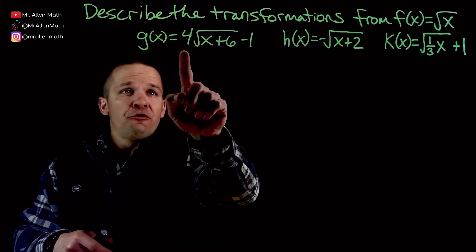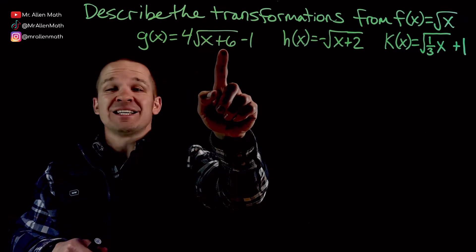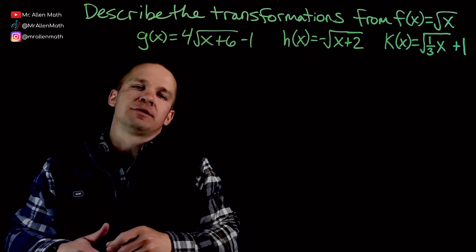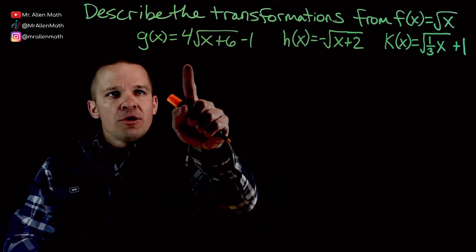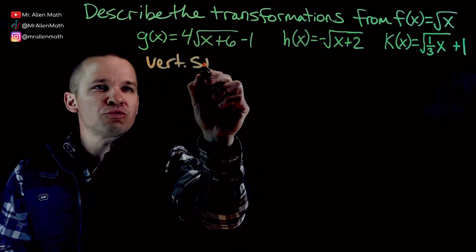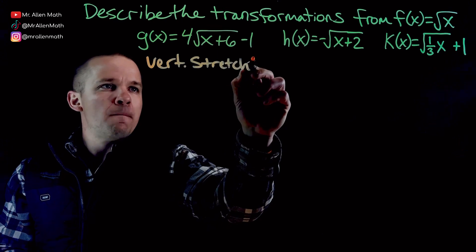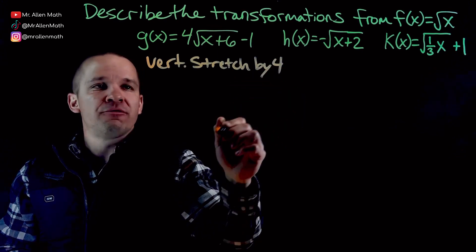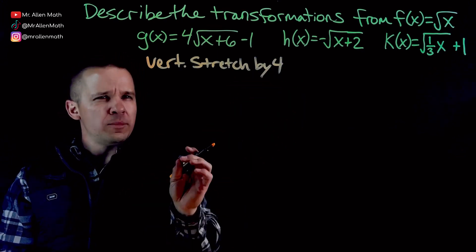So we've got g(x) equals 4 times the square root of x plus 6 minus 1 outside. Let's see here. The 4 first. That is a vertical stretch by a factor of 4.